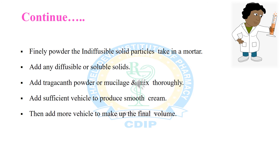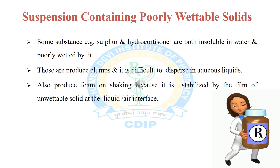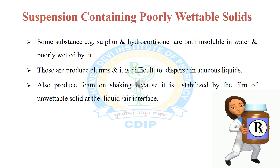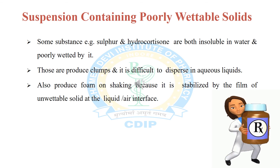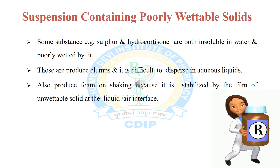Some substances, such as sulfur and hydrocortisone, are both insoluble in water and poorly wetted by it. They produce clumps and are difficult to disperse in aqueous liquid. They also produce foam on shaking because the foam is stabilized by a film of unwetted solid at the liquid-air interface. To formulate suspensions containing these poorly wettable solids, the addition of a wetting agent is required.